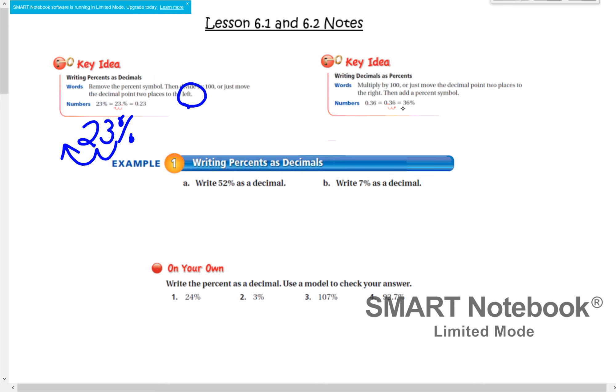When we are writing decimals as percents, we are taking that decimal and technically multiplying by 100, moving that decimal place two to the right. So this becomes 36%, and this becomes 23 hundredths or 0.23.